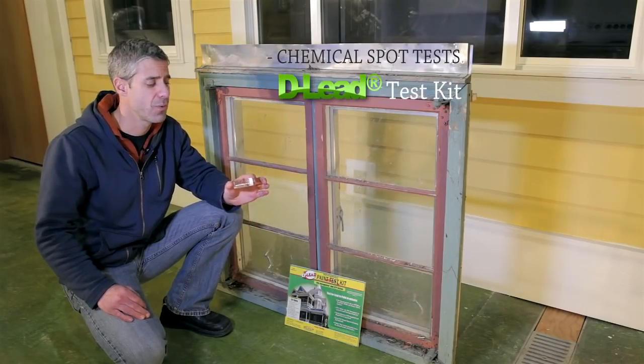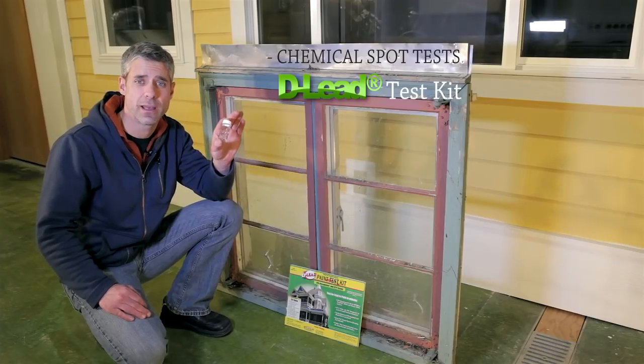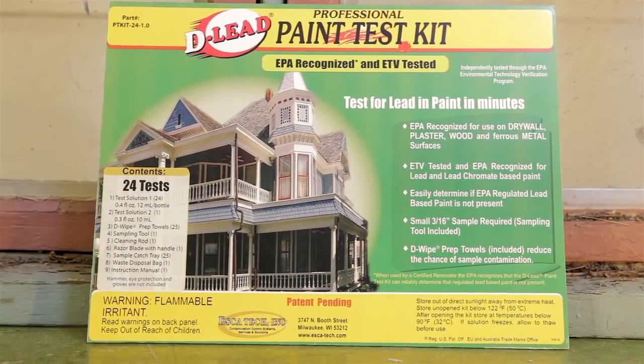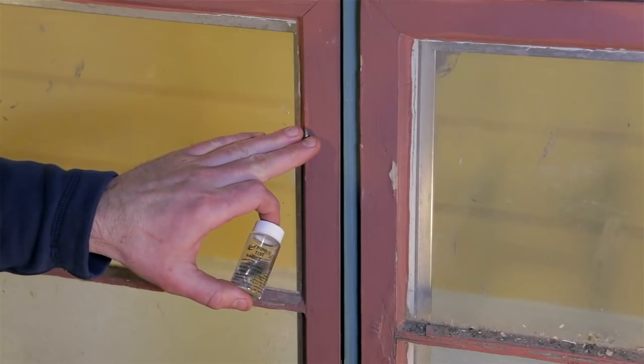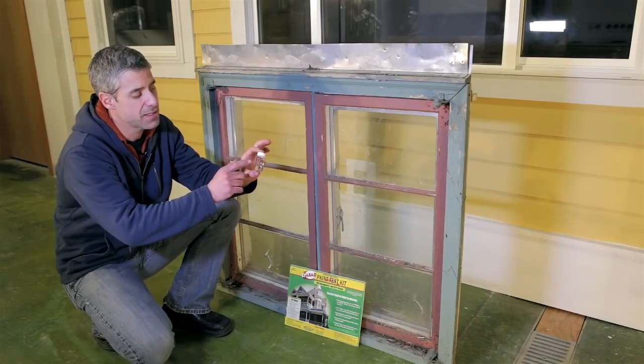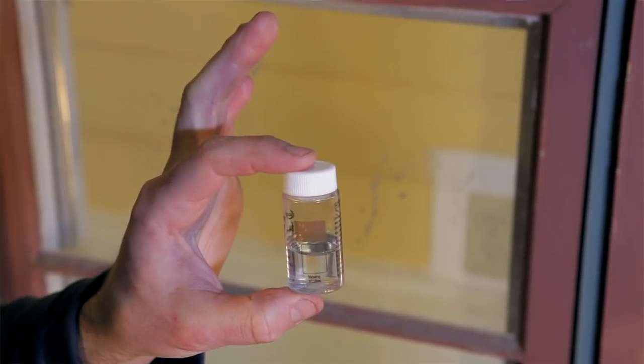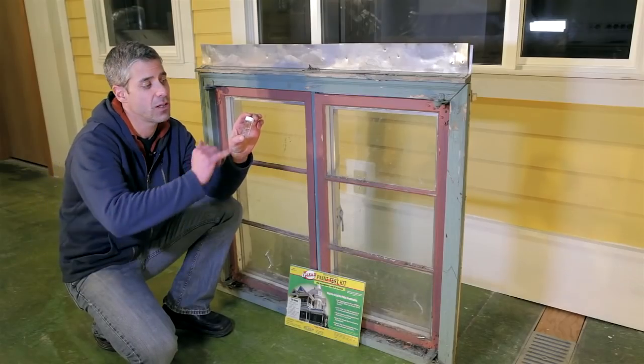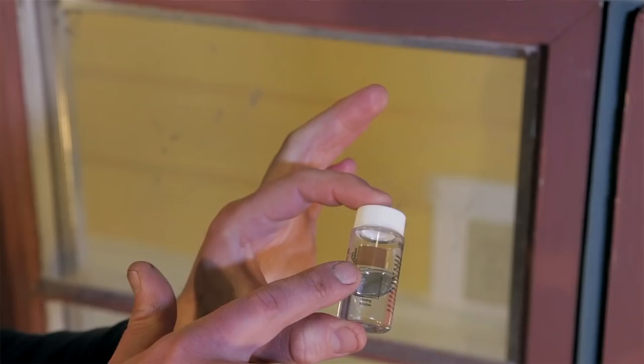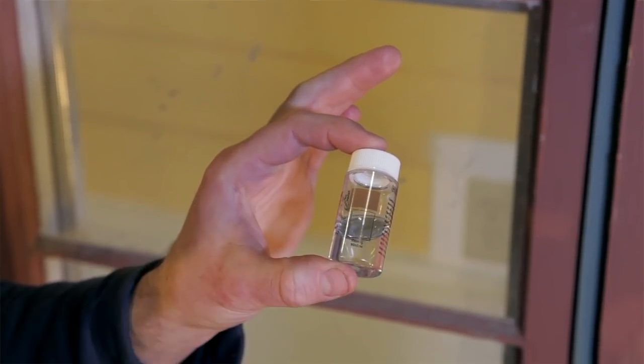Another chemical spot test recognized by EPA is D-Led. Now this one's a bit trickier to use. Basically it involves taking a sample of our paint, placing that sample inside this vial, and adding five drops of a chemical reagent. We then shake it up and watch for the color change to see how dark it gets and compare it to this standard on the bottle.